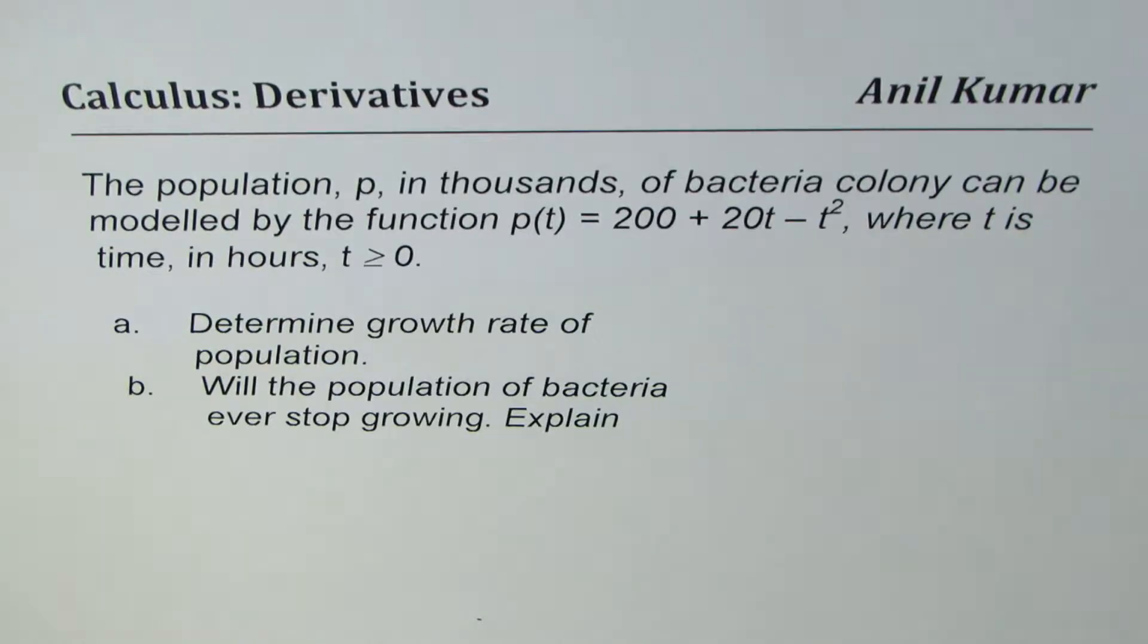The population P in thousands of bacteria colony can be modeled by the function P(t) = 200 + 20t - t², where t is time in hours, t ≥ 0.